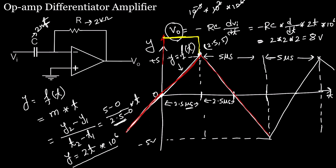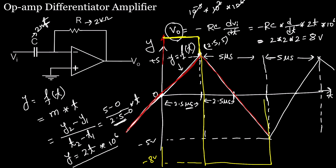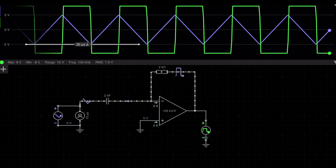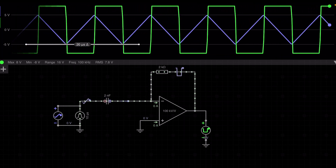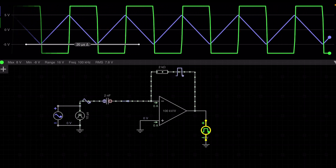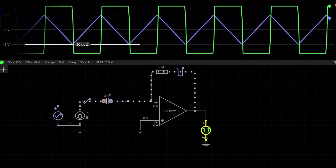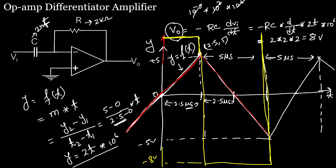For the falling segment of the triangular wave the output will be -8 V, and after that it returns to +8 V. The blue waveform is the input (±5 V triangular) and the green waveform is the output (±8 V square wave). The simulation result completely matches our calculations. That's all for the differentiator amplifier.